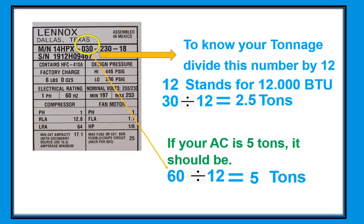Here we have an example using a Lennox air conditioner nameplate. To find the tonnage, divide the model number's key digits by 12, since 12 stands for 12,000 BTU. So 30 divided by 12 equals 2.5 tons — this nameplate is a 2.5-ton unit. If your AC is 5 tons, the number would be 60; 60 divided by 12 equals 5 tons.